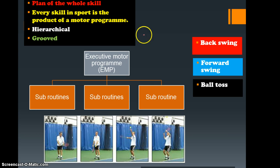In essence, what we need to understand is this: the plan or the executive motor program is the whole skill. Every skill in sport is a product of a motor program. It's hierarchical, and once we've established this skill and learned it, it's classified as grooved or overlearned.